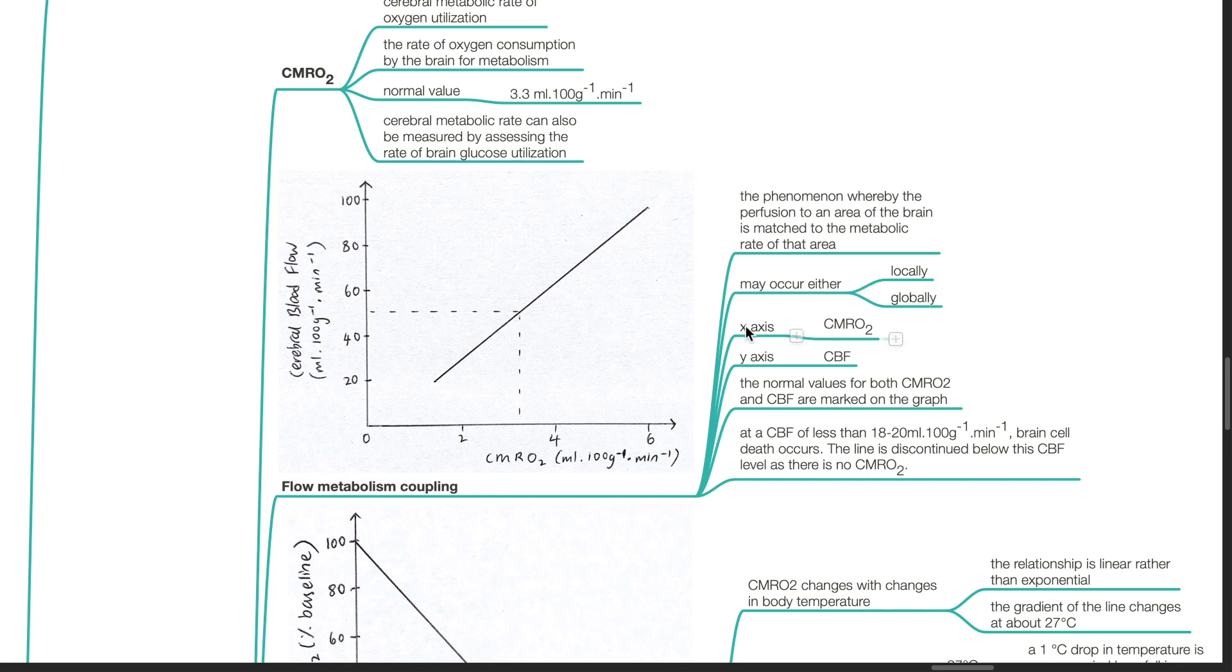The x-axis represents CMRO2 and the y-axis represents CBF. The normal values for both CMRO2 and CBF are marked on the graph. At a CBF of less than 18 to 20 mL per 100 g per minute, brain cell death occurs. The line is discontinued below this CBF level as there is no CMRO2.